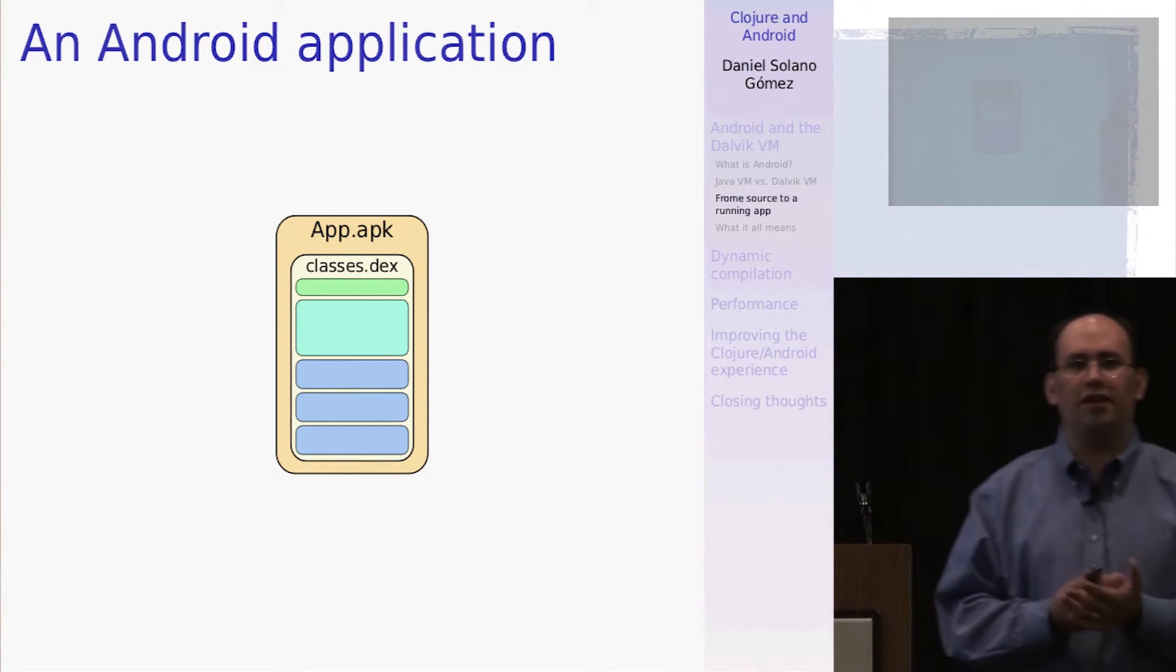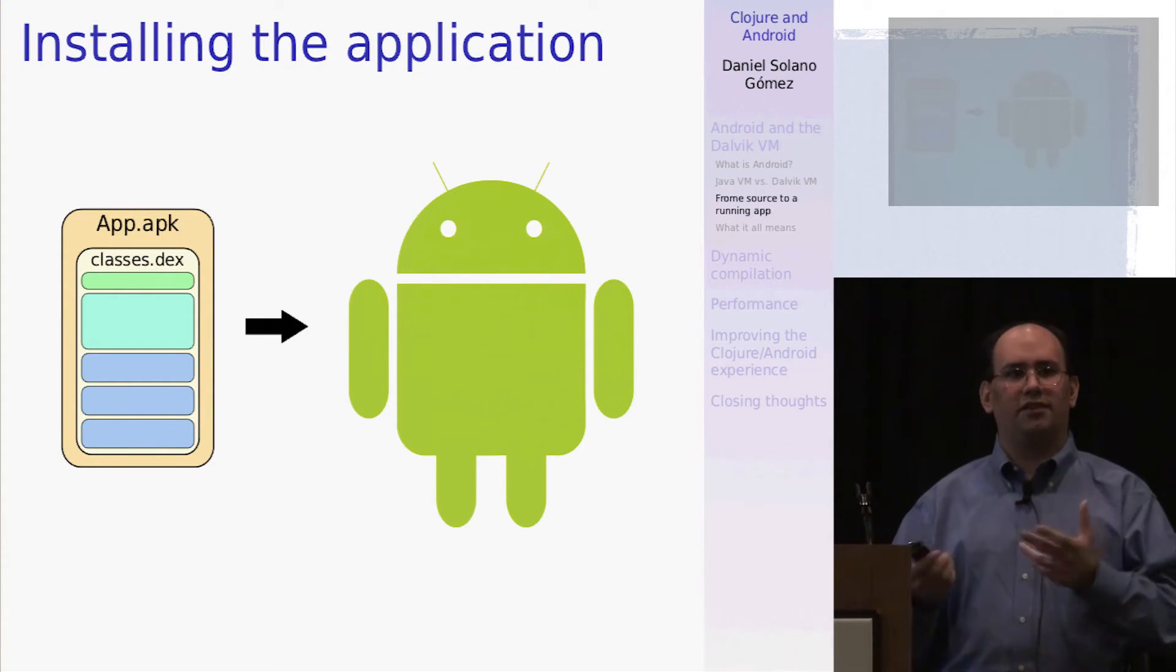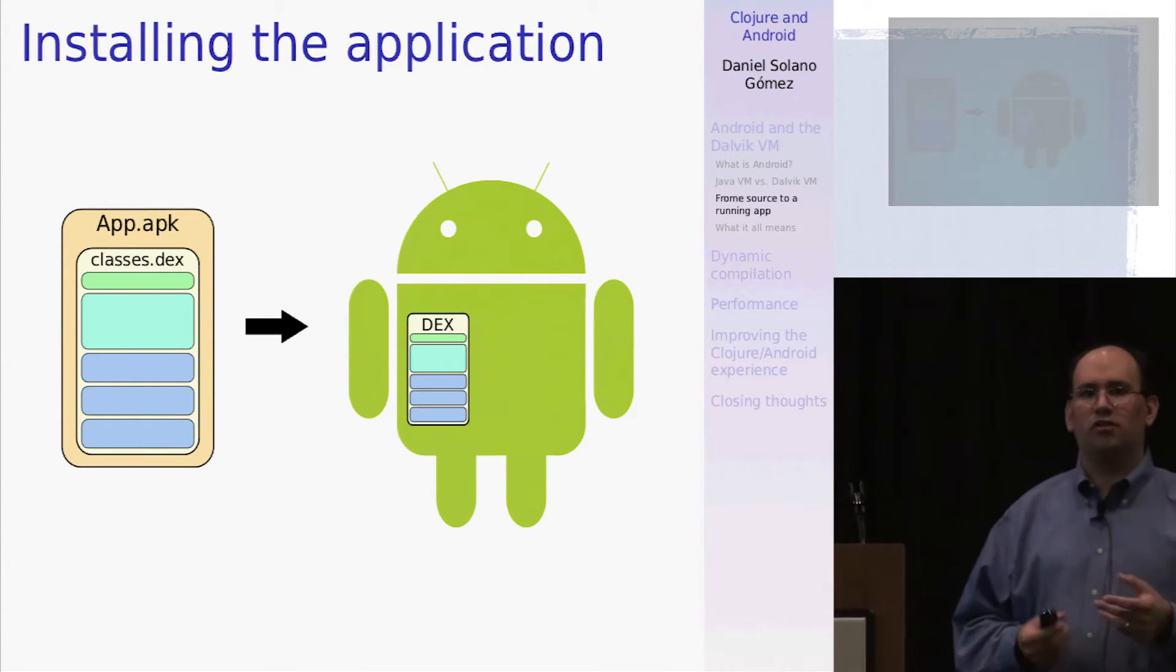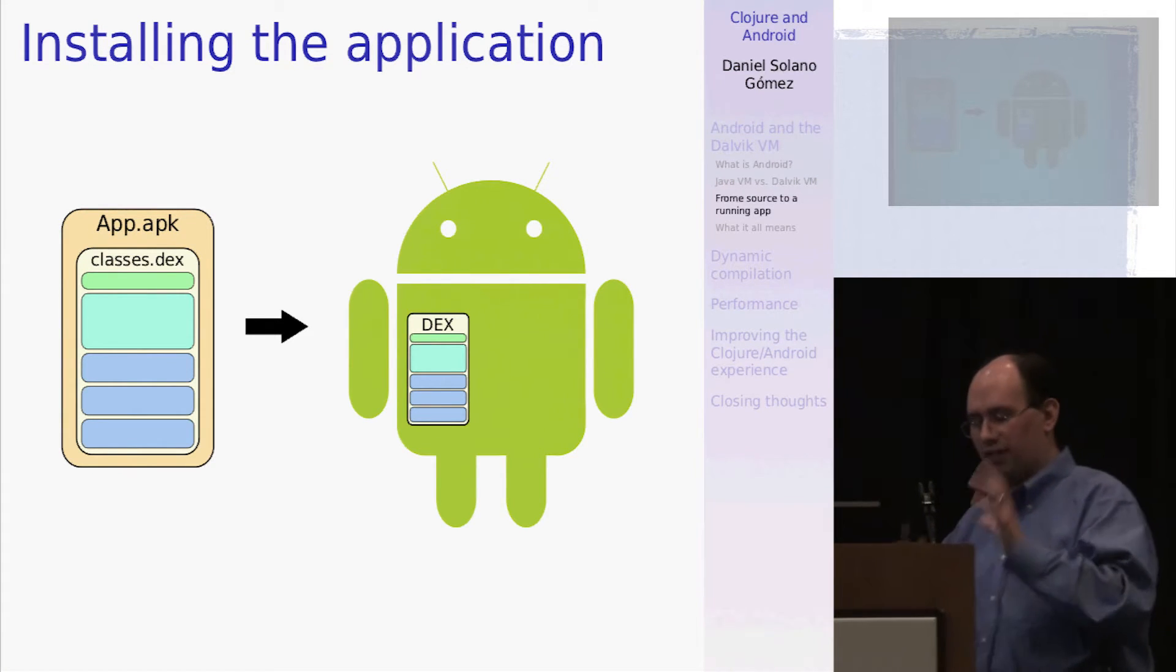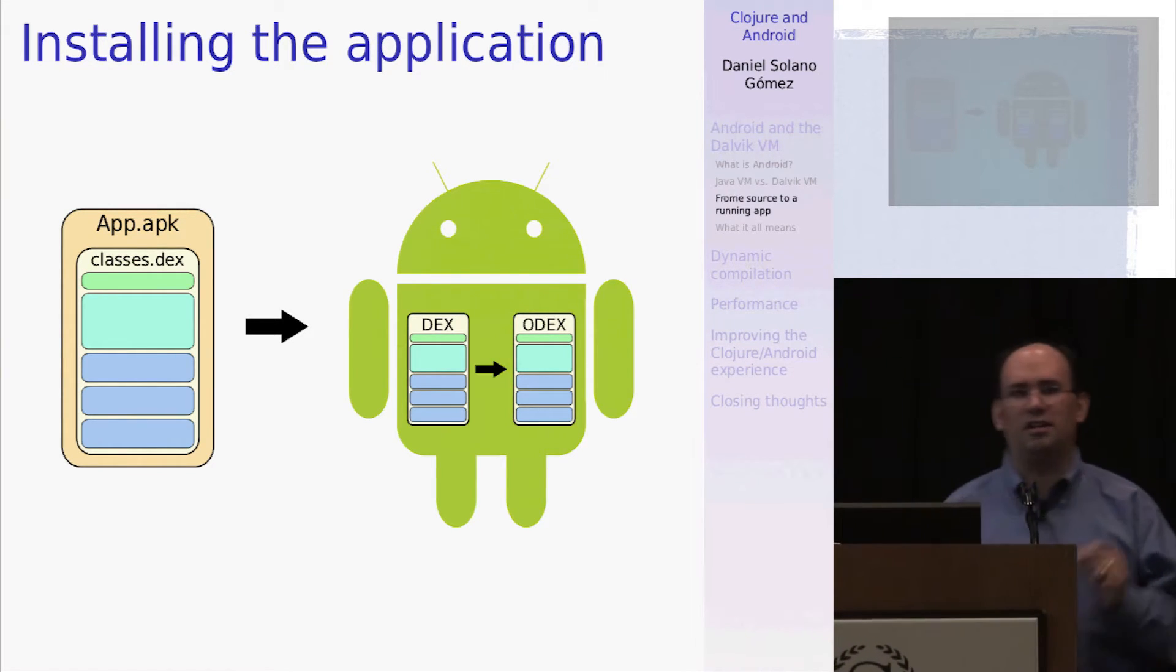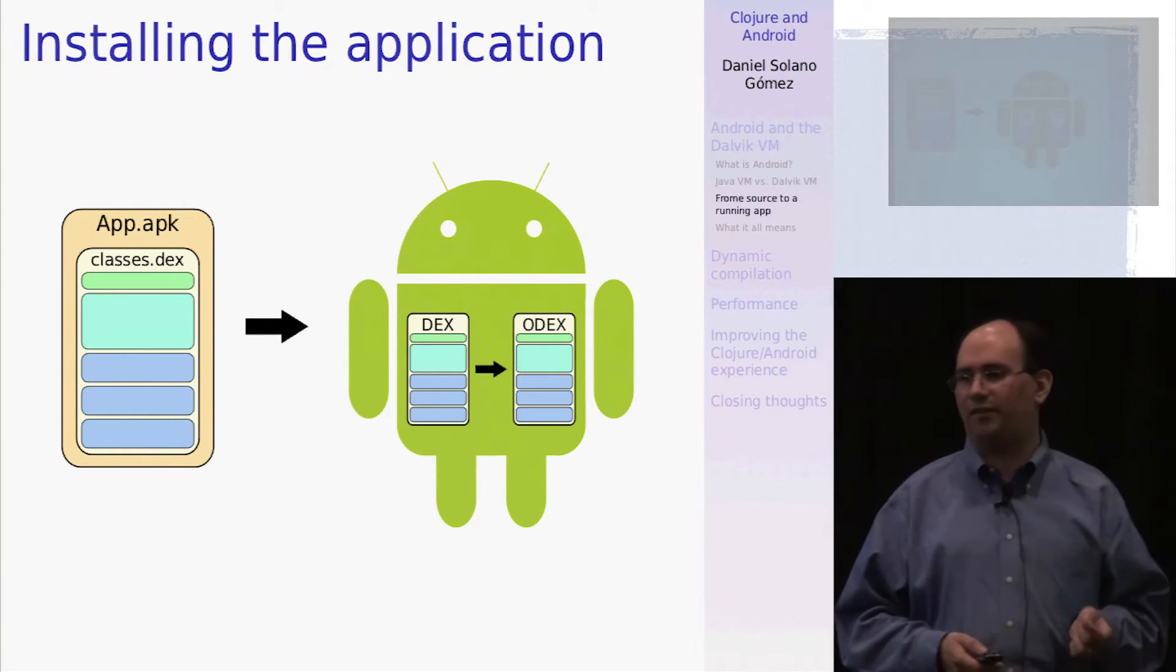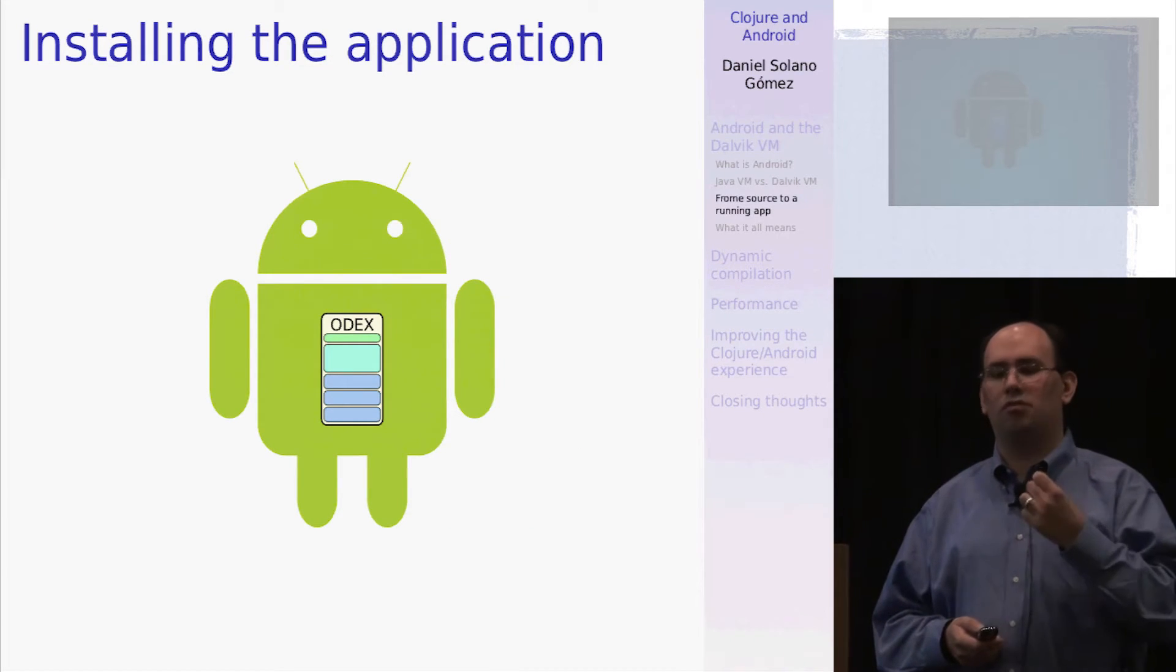So this DEX file is included in a container, just like a jar file, which is called an APK or Android package. And this is what your users use to install onto their device. So when that happens, the user will unpack the DEX or the Android runtime will unpack the DEX file and perform some verification and optimization. And the result is an optimized DEX file or ODEX file, and that is the actual bytecodes that Android will run.